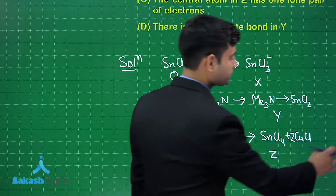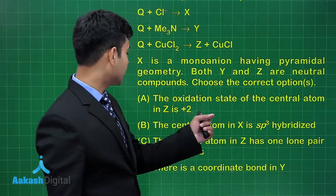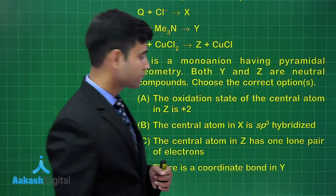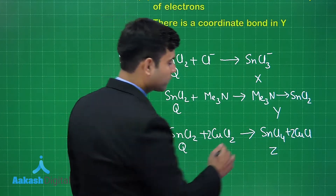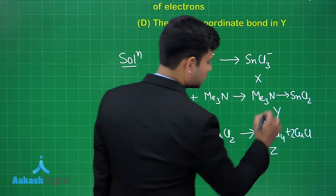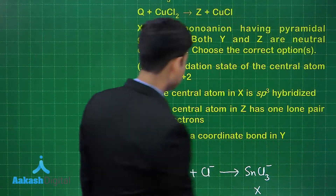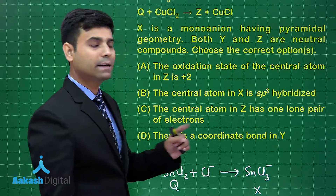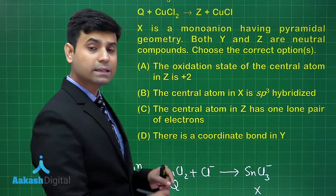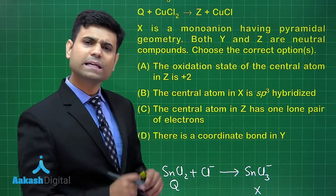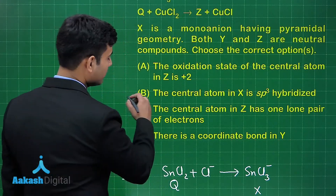Option A says the oxidation state of the central atom in Z is +2. For Z (SnCl₄), the oxidation state of tin is +4, so statement A is wrong. Option B says the central atom in X is sp³ hybridized. For X (SnCl₃⁻), the central atom Sn is sp³ hybridized with pyramidal shape and a lone pair. Hence statement B is correct.